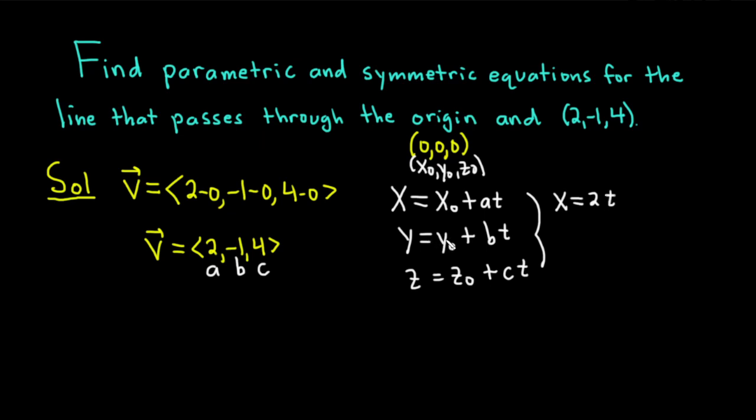And y equals, well y0 is 0, so we just get b t. So just negative t because b is negative 1.